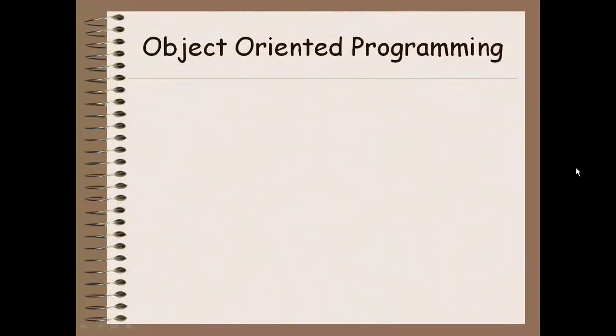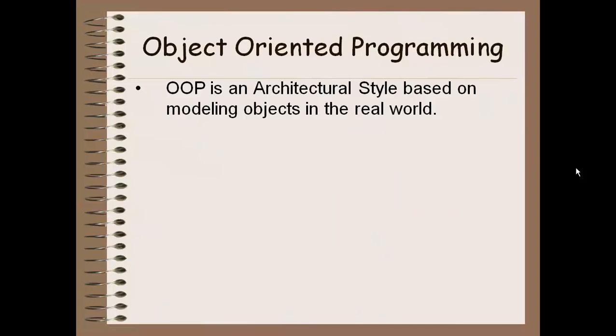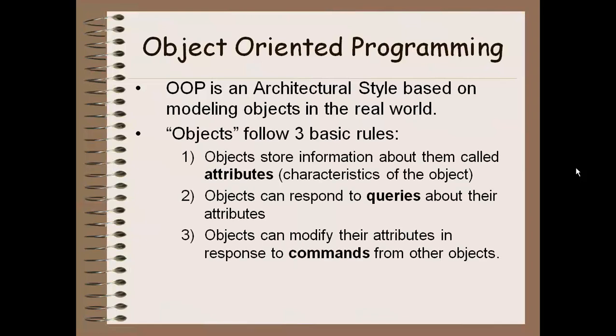Object-oriented programming is an architectural style based on modeling objects in the real world. What this means is that your entire program is going to consist of a variety of objects that are interacting with each other. Think of Call of Duty — you have a person object and another person object, and each person object probably holds some sort of gun object that fires bullet objects. When those bullet objects hit a person object, it causes damage and so on. The whole world is going to be those objects interacting with each other.